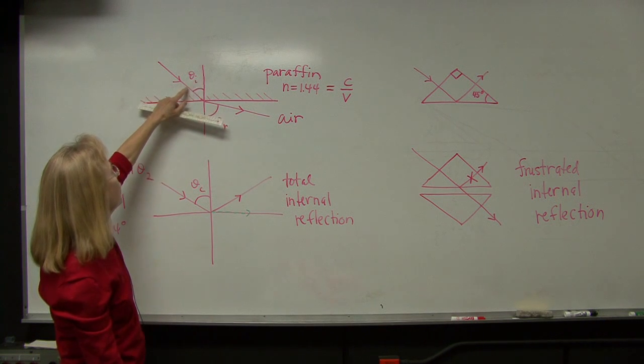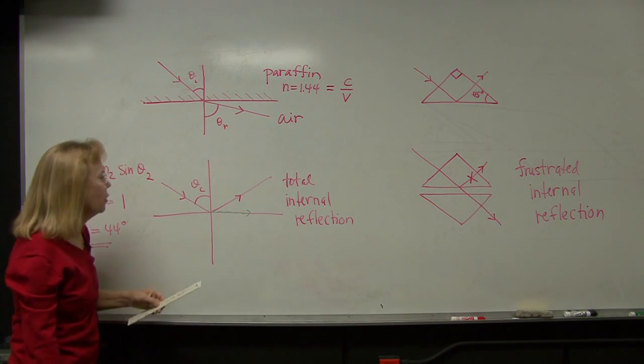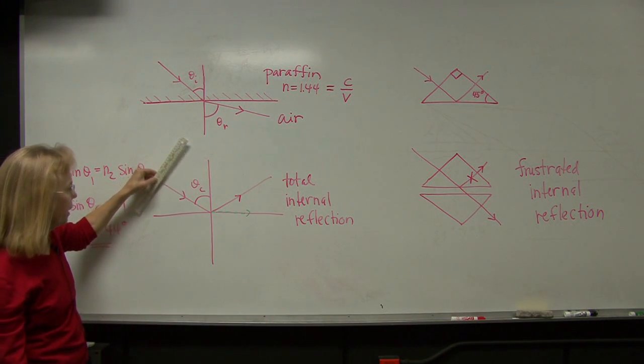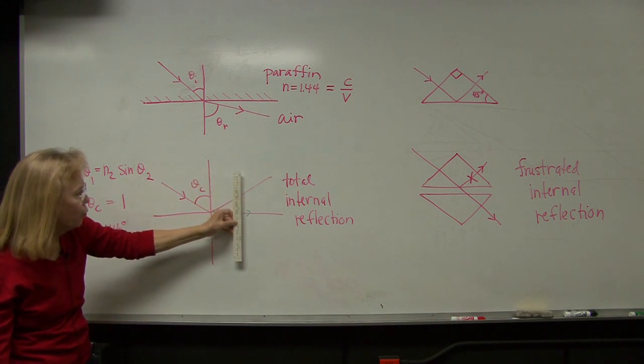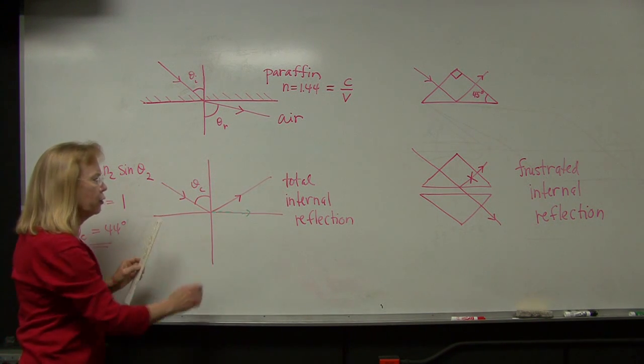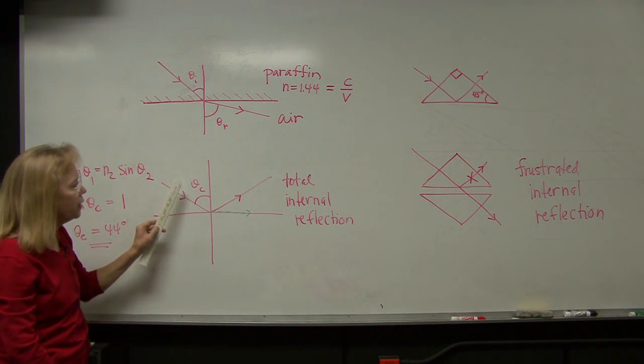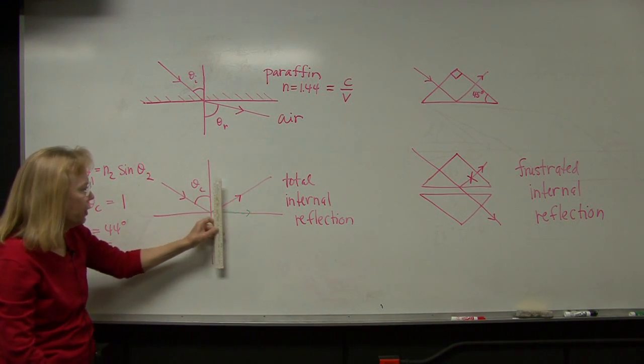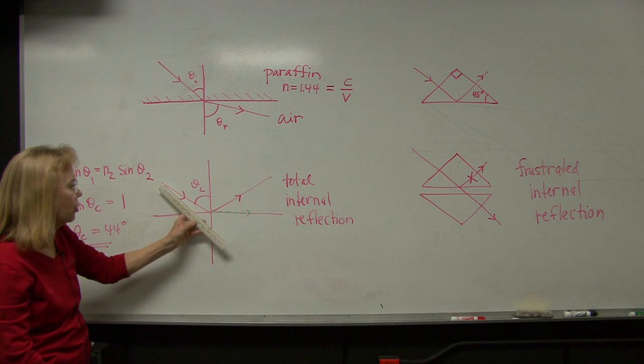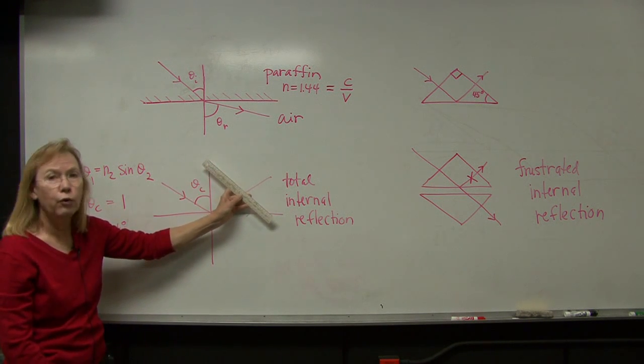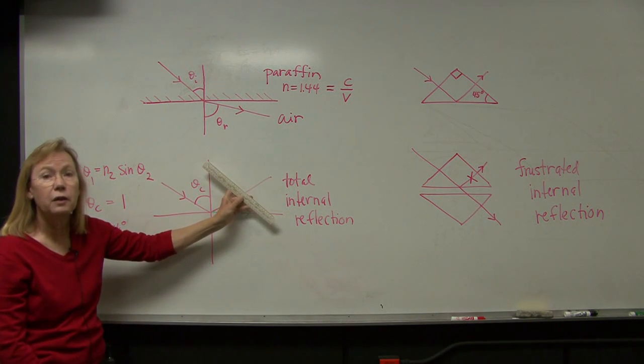And if we increase the size of this angle a little bit, we're going to hit an angle where that refracted ray would travel right along the interface. That's called the critical angle. But instead of actually traveling along the interface, it turns out that the energy reflects off of the interface entirely.